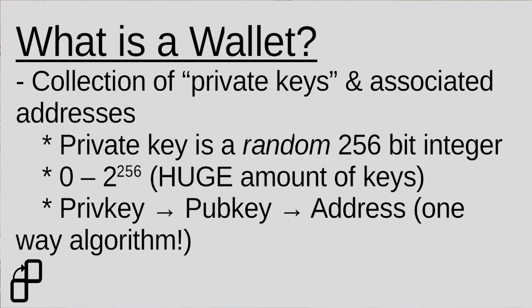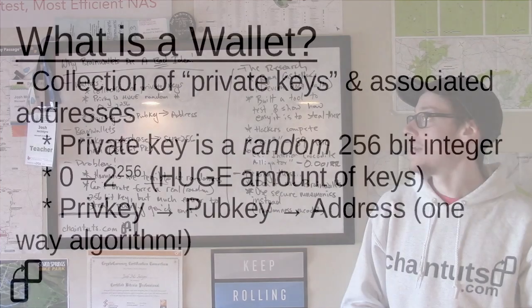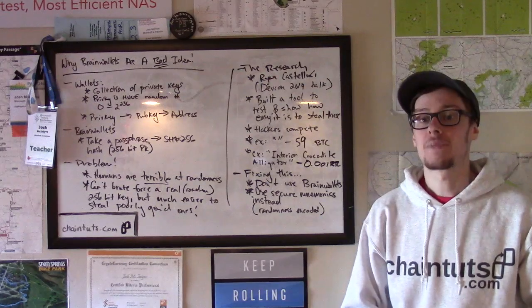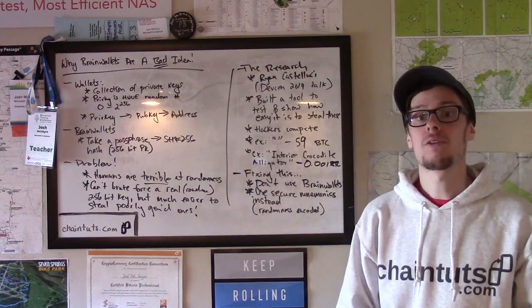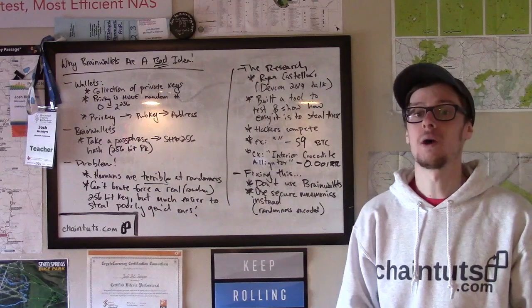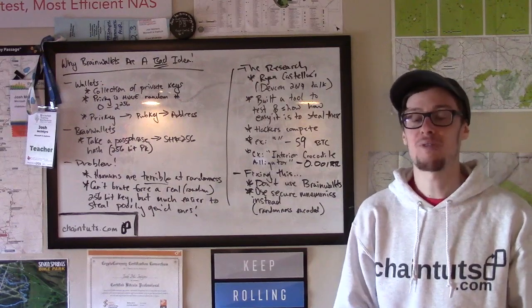Your private key can actually be any number from zero to two to the 256th power minus one. This is a really enormous key space — two to the 256th power is an unfathomably large number, and this comes into play later when we talk about wallet security and why brain wallets aren't so secure. Your wallet then takes this private key and, using ECDSA — the elliptic curve algorithm — it generates a public key.